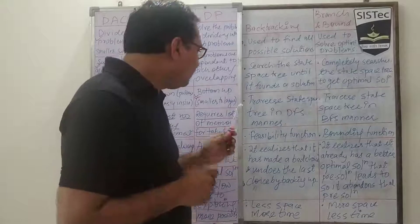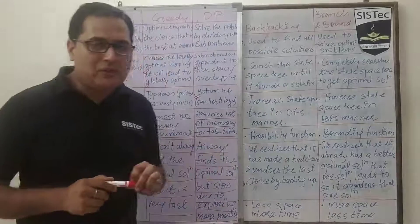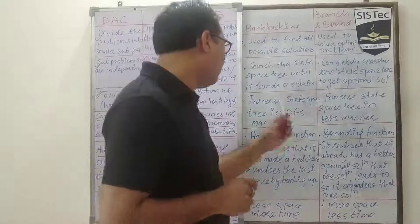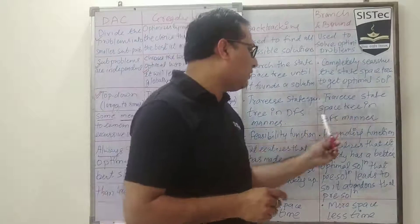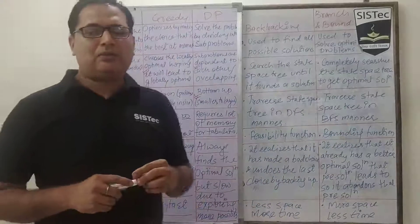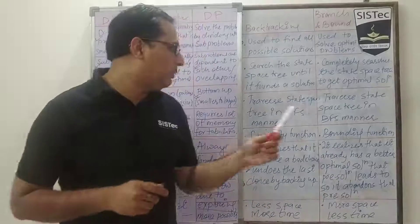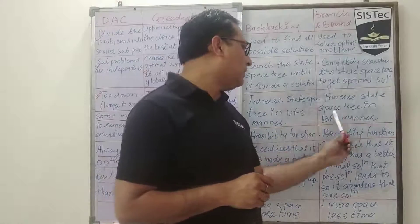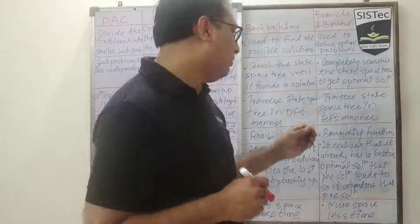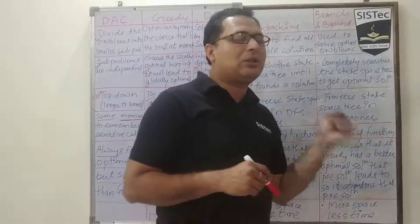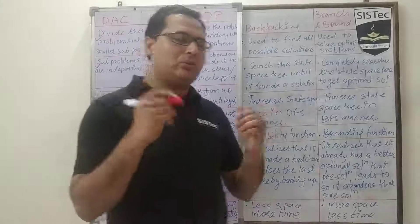The next point is that backtracking traverses the state space tree in a DFS manner, that is, in depth-first manner. Whereas in the case of branch and bound, it also traverses the state space tree in DFS manner when exploring all possibilities. However, in the case of least-cost branch and bound, we always explore the optimal one first, so even in the best case we need not explore all possibilities.